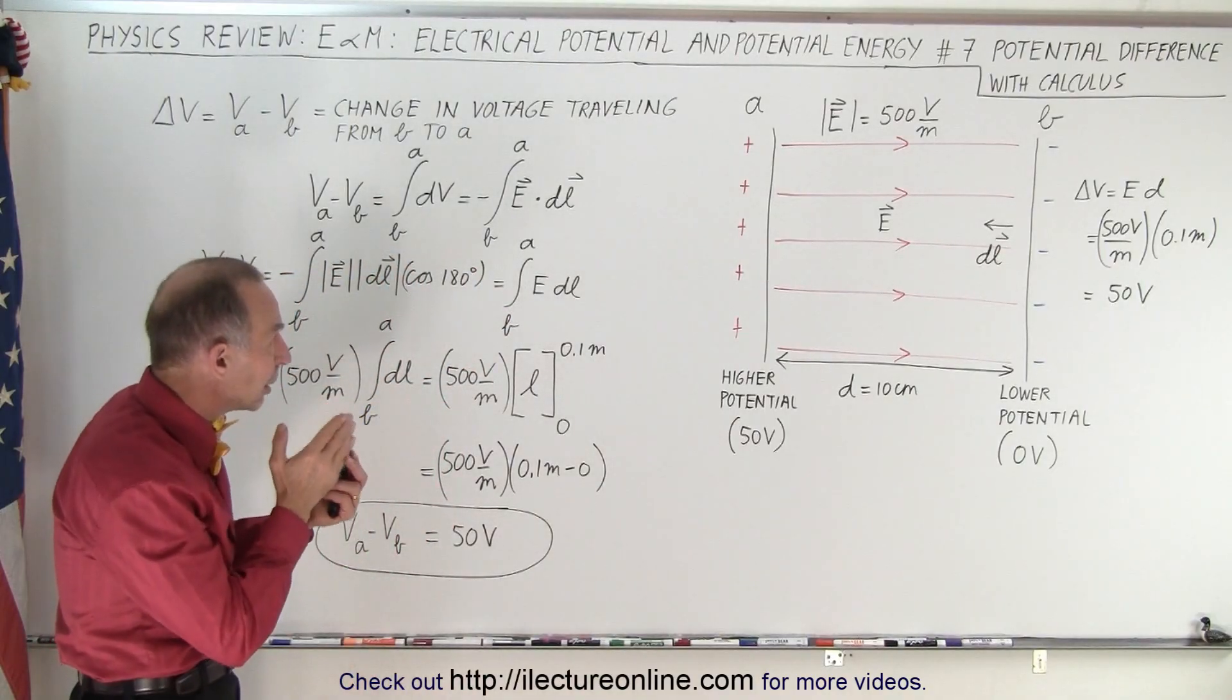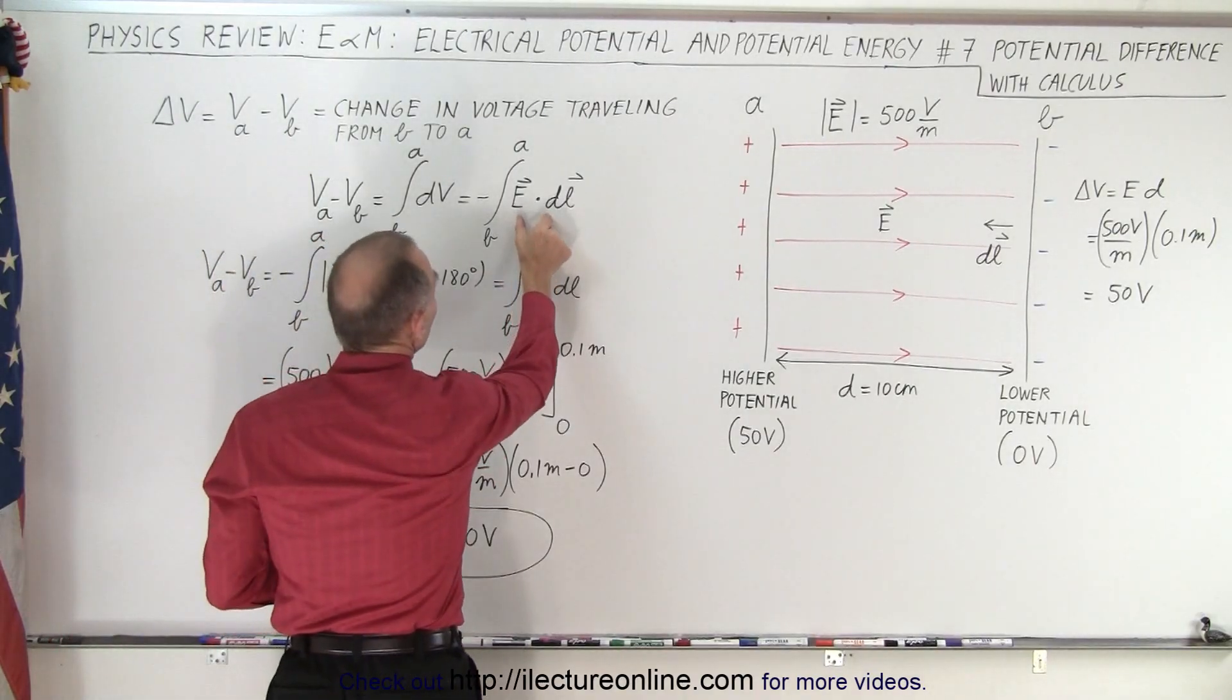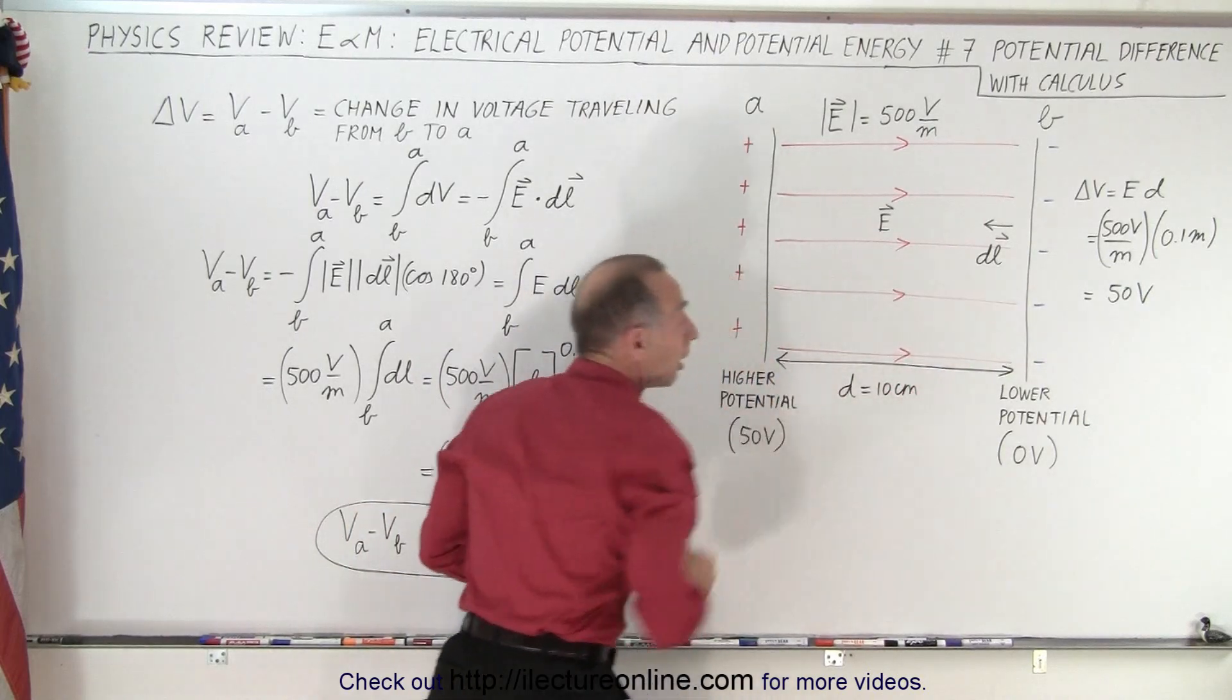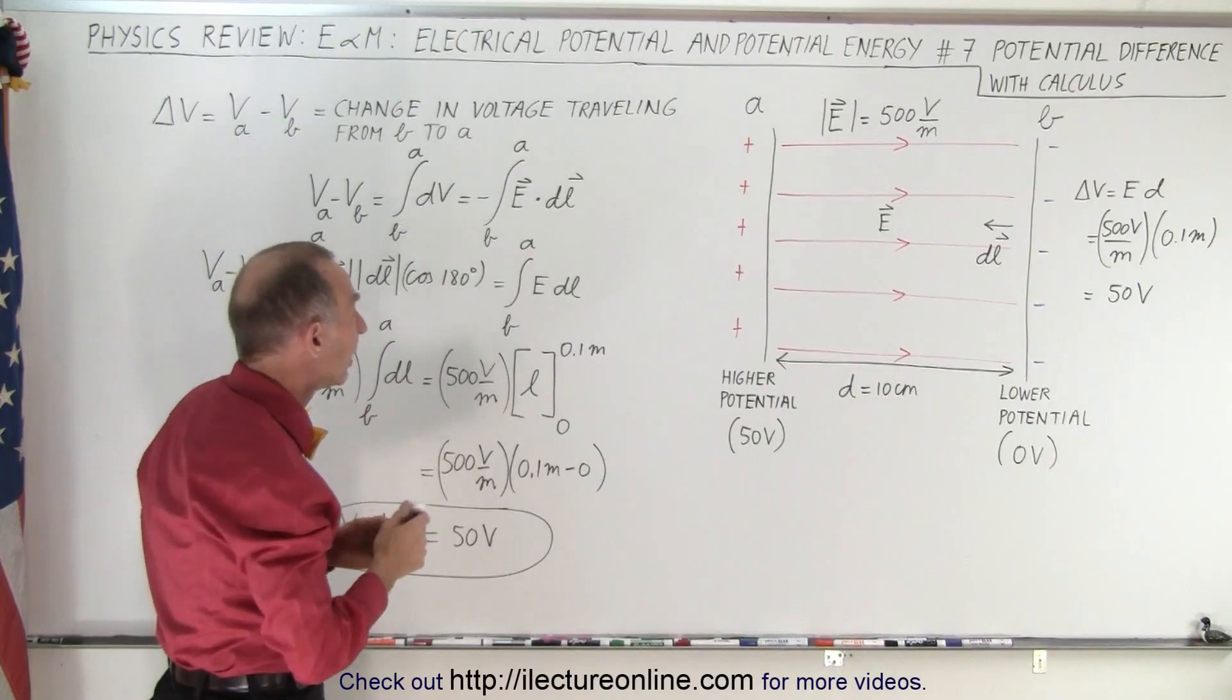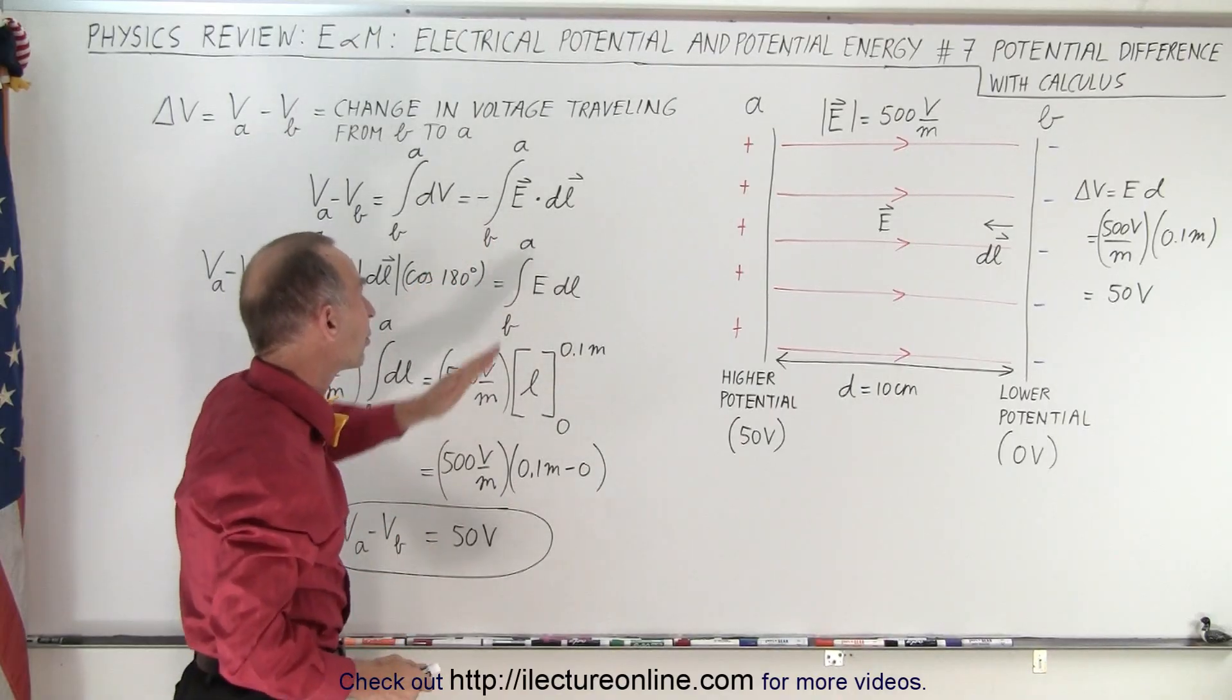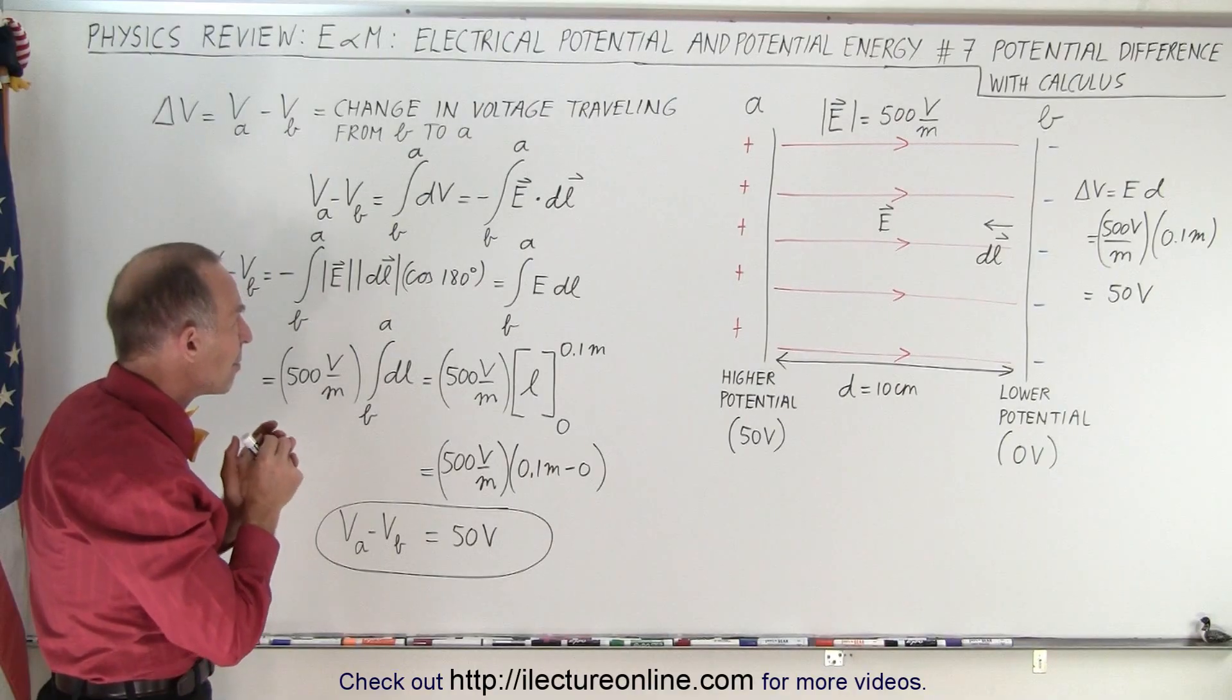So we're going to, now assuming that the electric field is variable, we of course make this product with every little DL and we add it all up. Now if E is a constant, like in this case for simplicity, then of course we can take E outside the integral sign, we're just integrating DL. But nevertheless this is how we must do that.